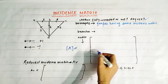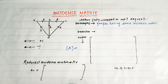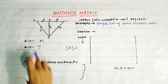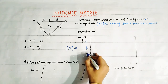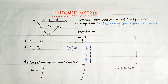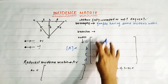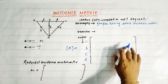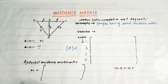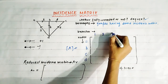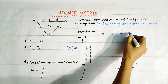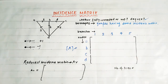The number of rows equals the number of nodes in the graph. There are four nodes in this graph: A, B, C, and D. The number of columns equals the number of branches. Here there are five branches, so there are five columns in this incidence matrix.